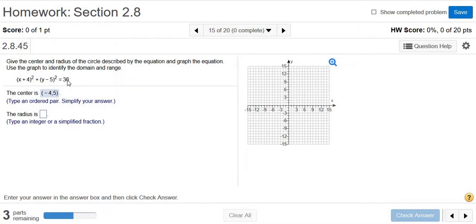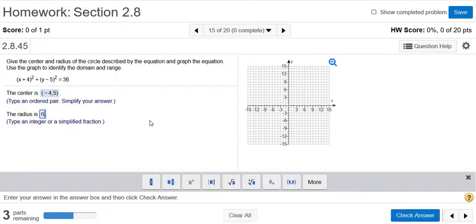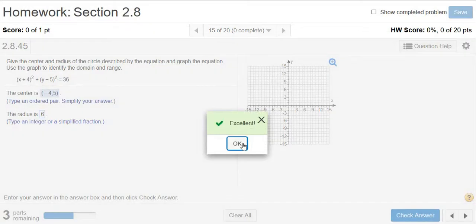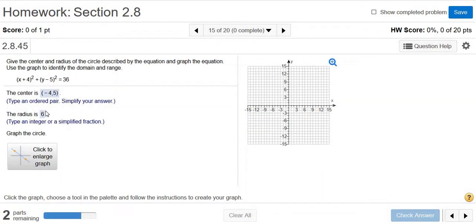To find the radius, you just take the square root of this number here. So the square root of 36 is 6. So again, to find the radius, you just take the square root of 36, which is 6.